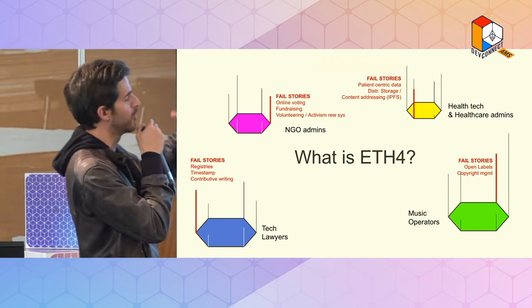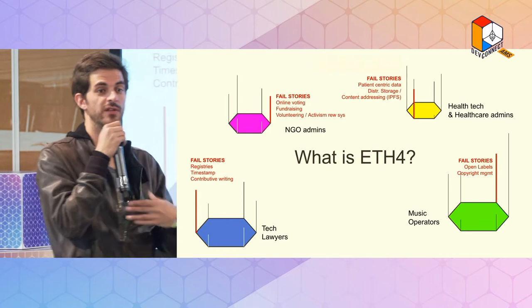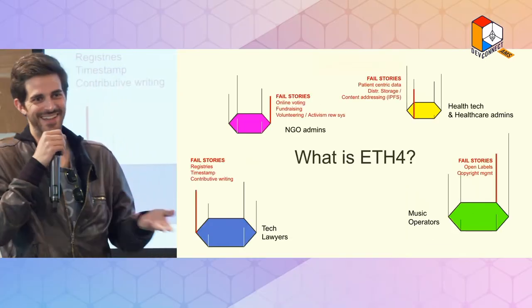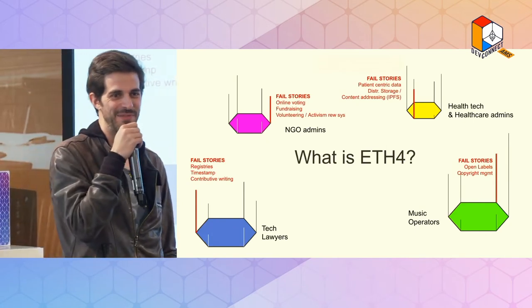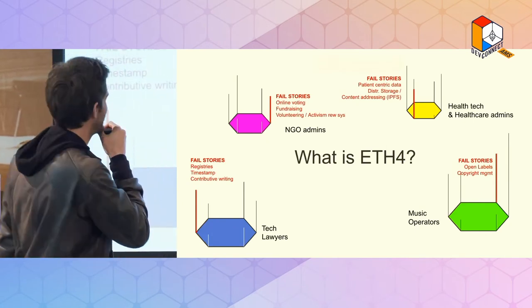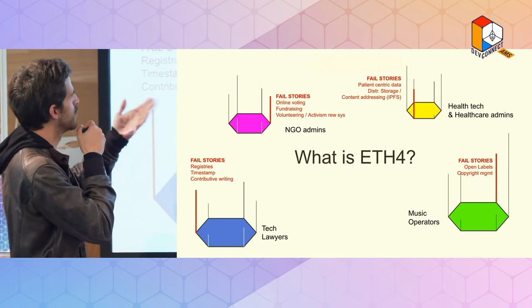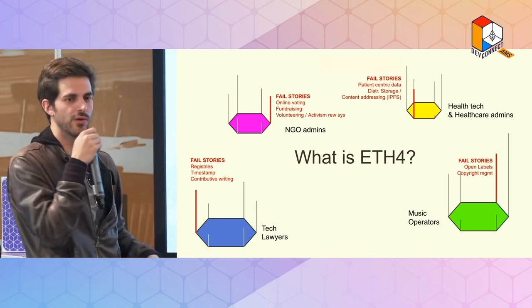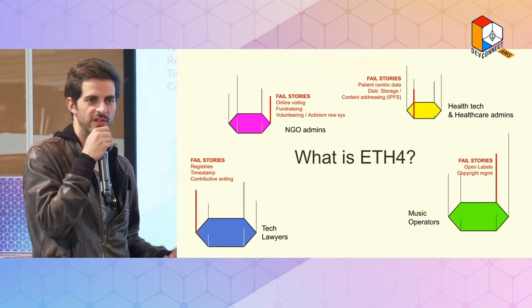Starting from NGOs, for example, during the pandemic most of them had to do internal voting, but they had to pay for online voting as a service - usually certified by the European Union - going for 10 to 15K a day. As high as gas fees can be, you can run it on-chain for a dollar or something. So we showed them how to run online voting, fundraising via NFTs, and how to create a reward system for their activists and volunteers.